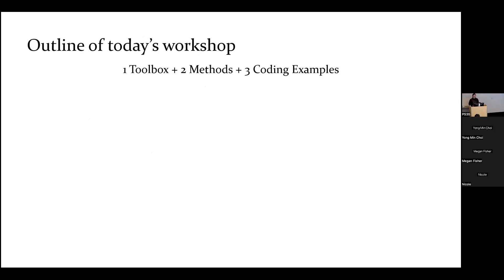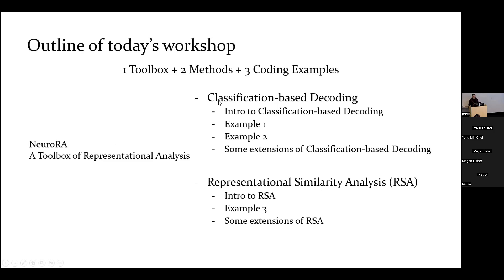Here's an outline of today's workshop. I will introduce one toolbox, two methods, and three coding examples. For the toolbox, I will introduce a toolbox called NeuroRA to do the representational analysis. For the two methods, I will focus on classification-based decoding and representational similarity analysis. For classification-based decoding, I will first do a brief introduction and use two examples. In those two examples, let's do the code together.